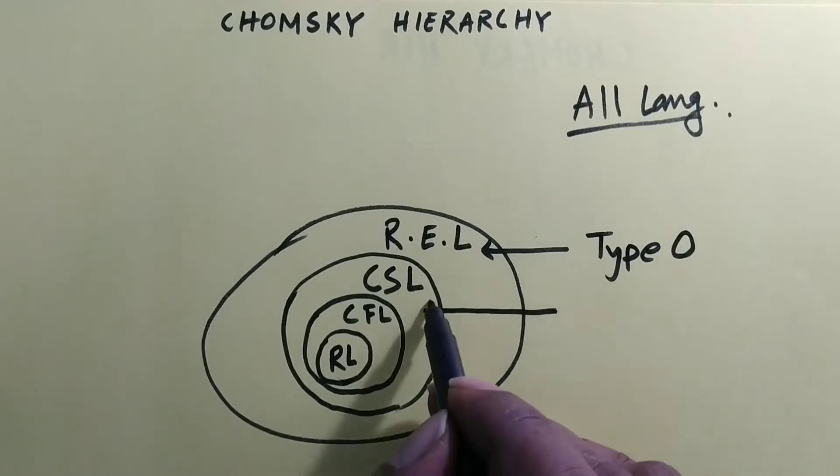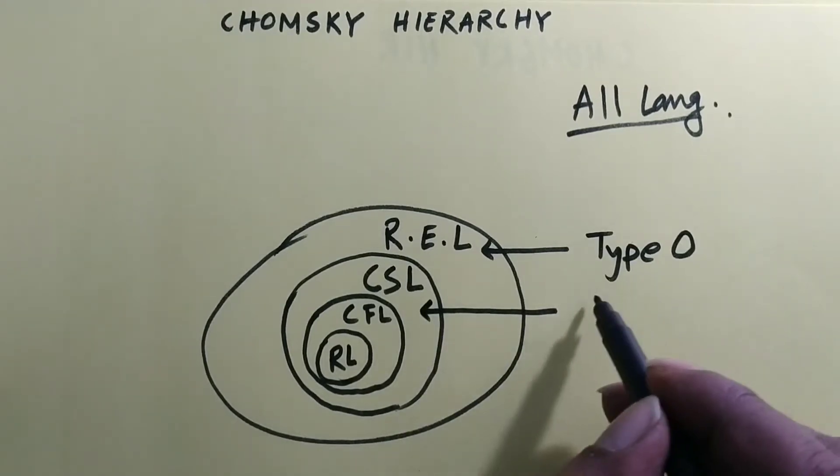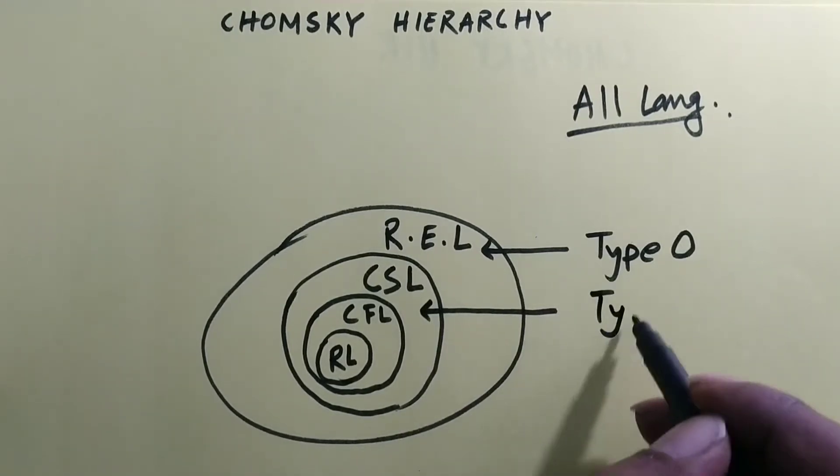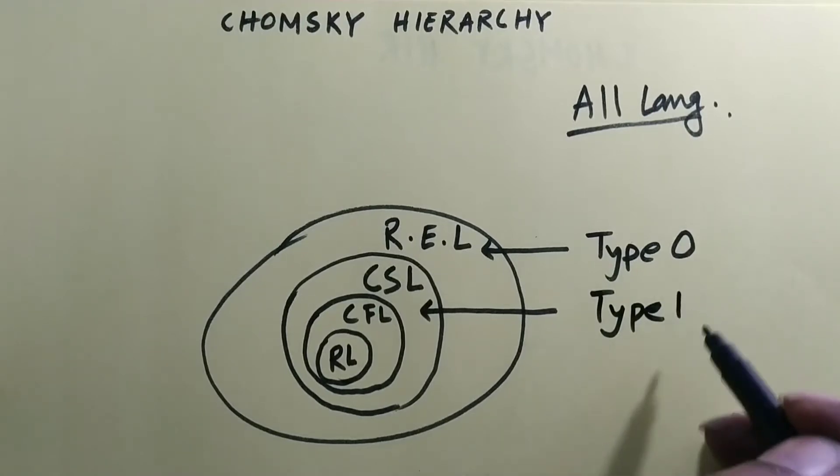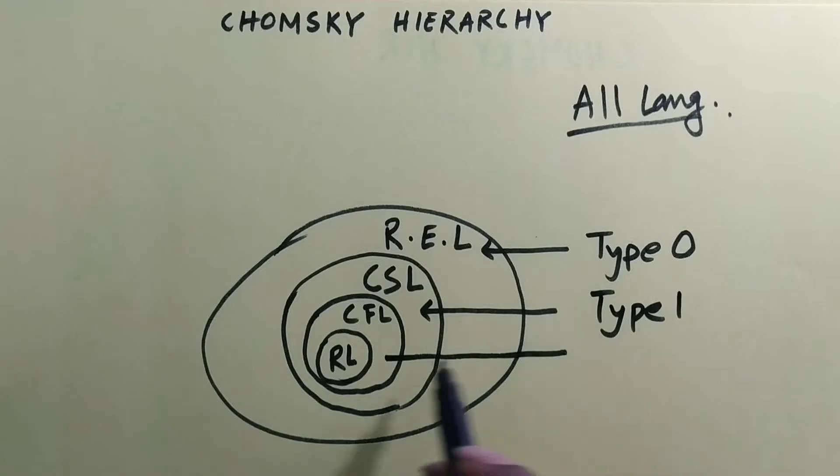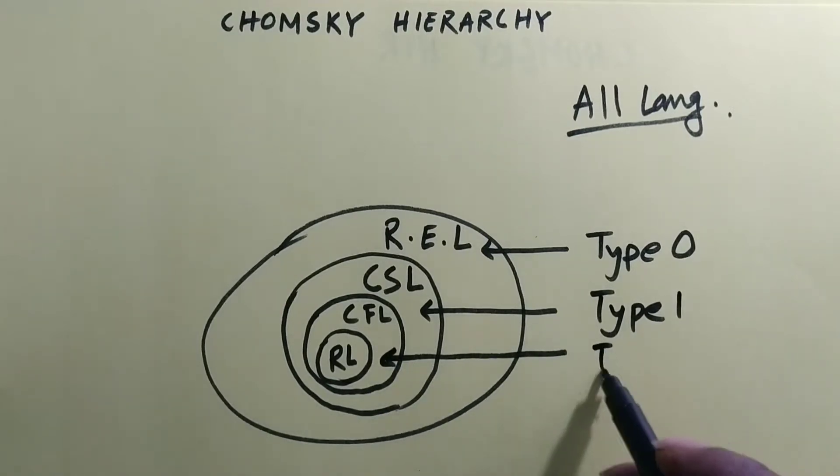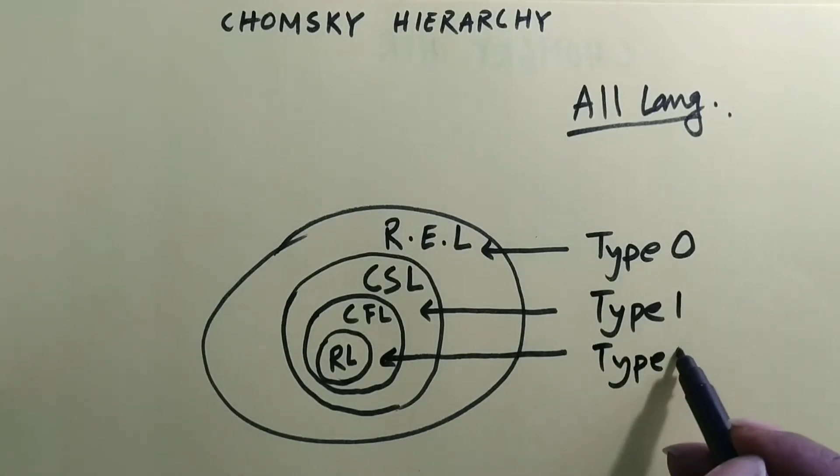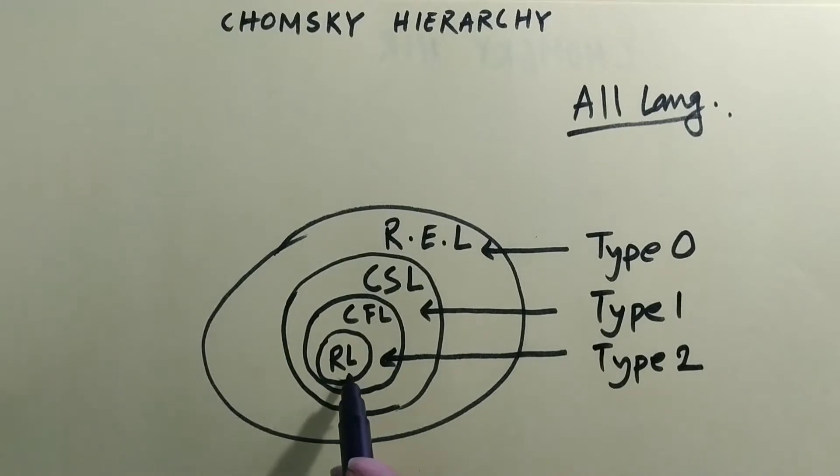Context-sensitive languages was called as type 1 languages. Context-free languages are type 2 languages. And regular languages are type 3 languages.